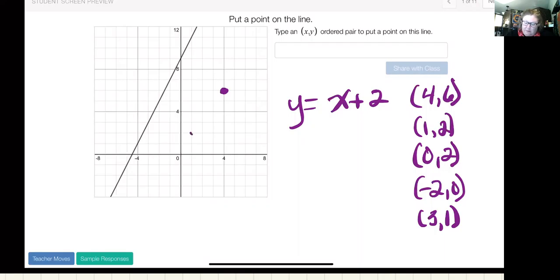One comma two would be here, zero comma two would be here, negative two and zero would be here, three and one would be here.